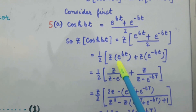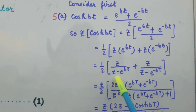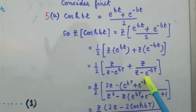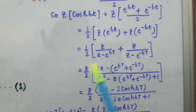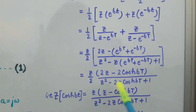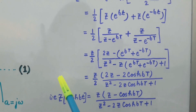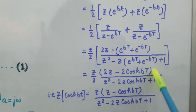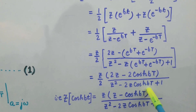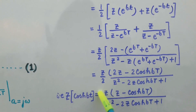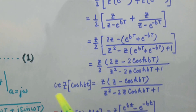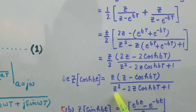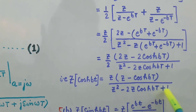On simplifying, the Z transform of cosh(bt) comes out to be (Z/2) · [2Z - 2cosh(bT)] / [Z² - 2Z·cosh(bT) + 1]. The factor of 2 cancels from numerator and denominator, so the Z transform of cosh(bt) = Z(Z - cosh(bT)) / (Z² - 2Z·cosh(bT) + 1).